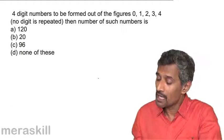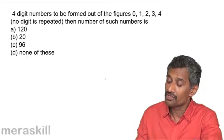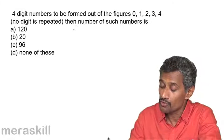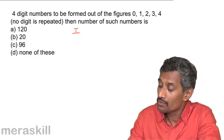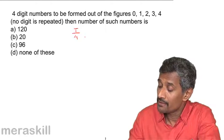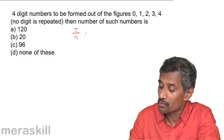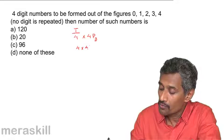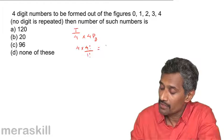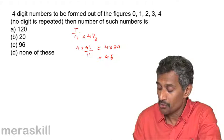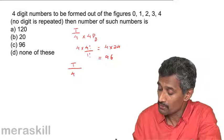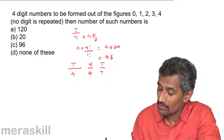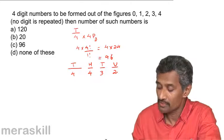How many four-digit numbers can be formed from 0, 1, 2, 3, 4 with no digit repeated? In the thousands place only 1–4 are valid: 4 ways. The remaining three digits are chosen from the 4 remaining (including 0): 4 × ⁴P₃ = 4 × (4!/1!) = 4 × 24 = 96. Alternatively: 4 × 4 × 3 × 2 = 96.